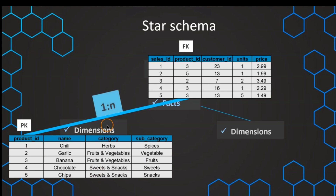We have a one-to-many relationship usually between the fact and the dimension table. This refers to the fact that we have the one side on our dimension table, where every single value in the column used for the connection — the product ID — occurs only once. So every value is unique, and that's why we have this one on the dimension side. The N on the other side is the many side, meaning for the product ID column, values potentially occur multiple times.